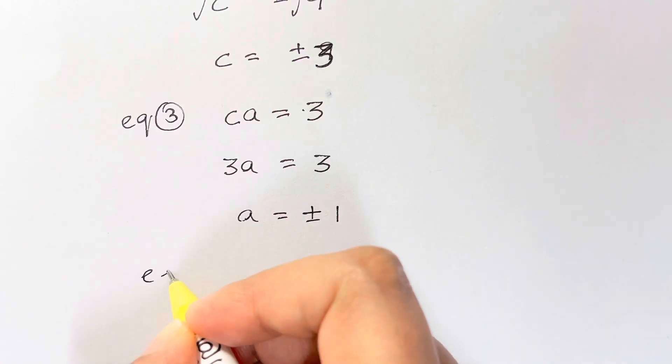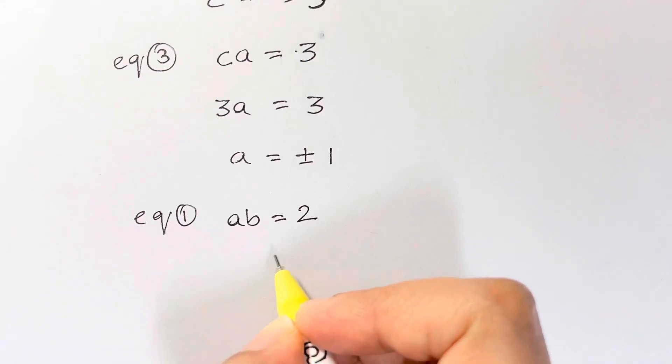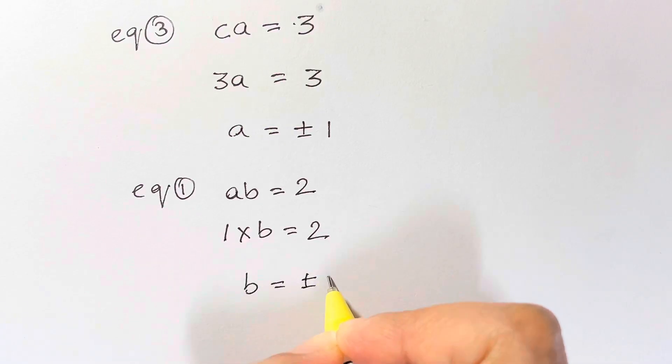Now from equation 1, we have AB equals to 2. Now let's substitute the value of A, 1 times B equals 2. So B is equal to plus or minus 2.